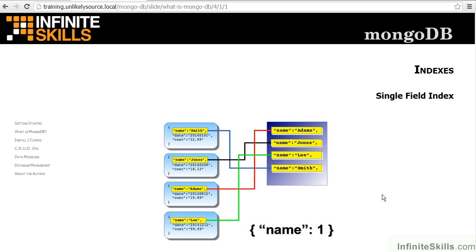The simplest index is on a single field within the document. In this example, our collection has fields name, date, and cost. If we were to take the documents in the order they appear in the collection, we would see Smith, Jones, Adams, and Lee. The index is on the field name; the number 1 indicates that the index is in ascending order. Accordingly, the index will end up with Adams, Jones, Lee, and Smith, with pointers to the appropriate documents within the collection. Any queries performed strictly on the index field will then be automatically optimized.